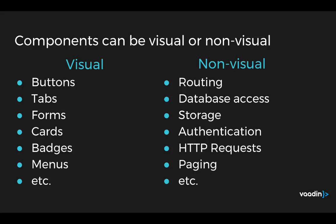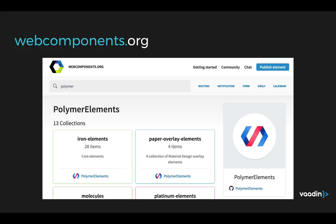There can be visual and non-visual components. Things like buttons and tabs are visual components, but routing and database access can be non-visual components. So you could use Polymer to create all sorts of different components in a larger web app. You can find a directory of web components at webcomponents.org, where you'll find all of Polymer's components and other component libraries like Vaadin Elements — everything from buttons to authentication to database management to grids and more.